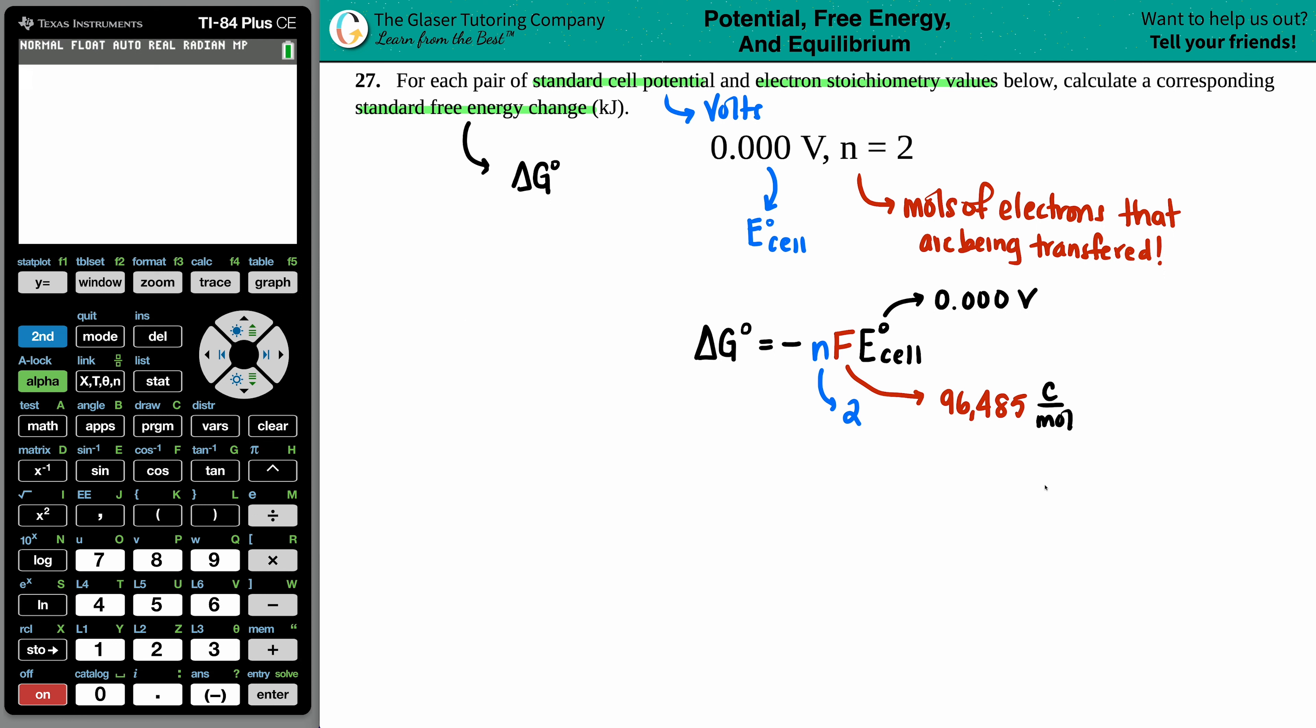Now you might say to yourself, well, where does the coulomb come from? Right? I'm supposed to be solving for something in kilojoules. Just know that volts is an easier way of just saying that this is joule per coulomb. And if I just substitute out the volts, there's your joule value. So the joule value is hidden in the volts.